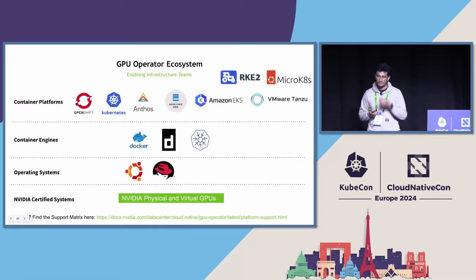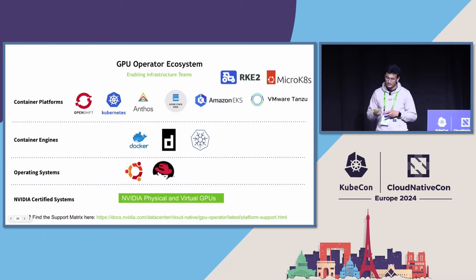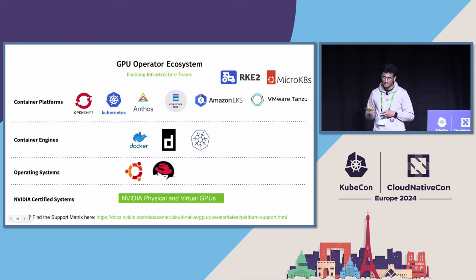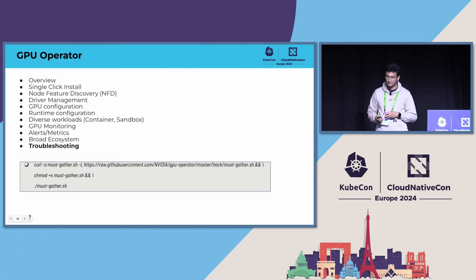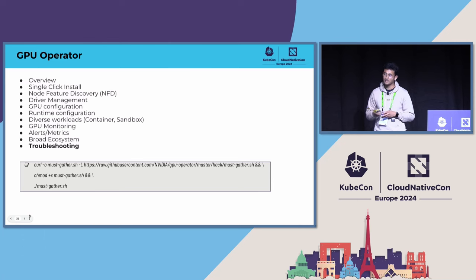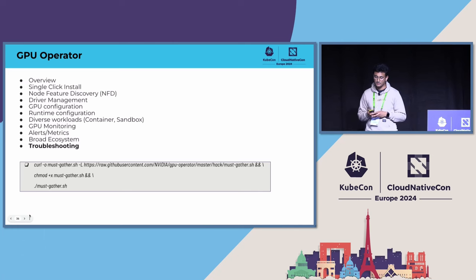We support a broader ecosystem — on-prem clusters and cloud providers — with various container runtimes. For operating systems we currently support mostly Ubuntu, CoreOS, and RHEL, and are planning to add support for others. For troubleshooting, we have a script to gather all required logs. If you see any issues, use the provided command to get all the logs.